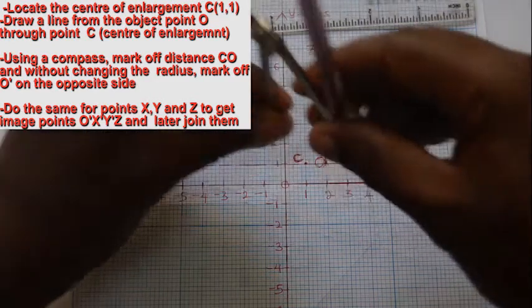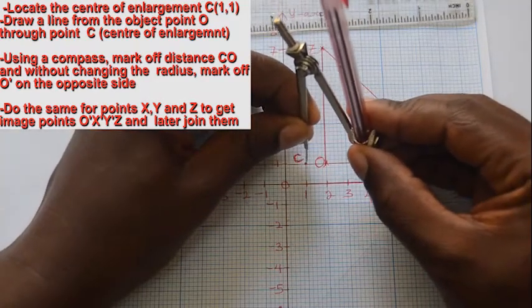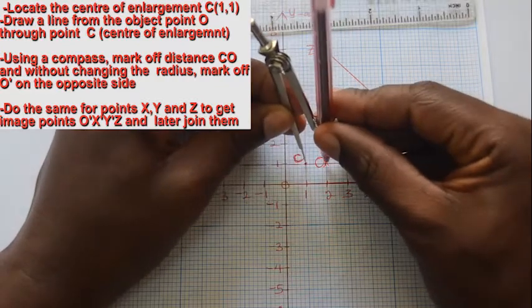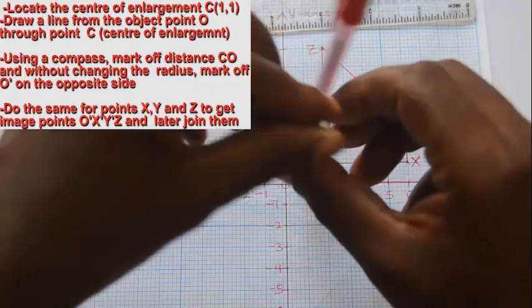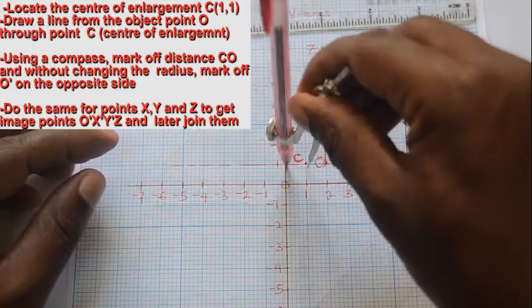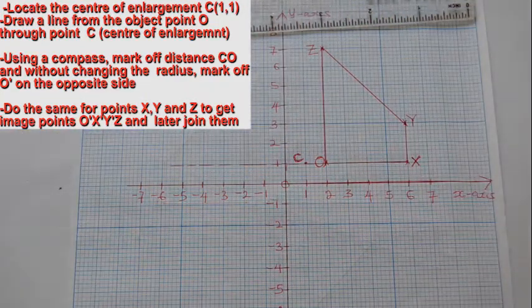Using a pair of compasses, put the compass pointer at the center of enlargement and stretch to point O.